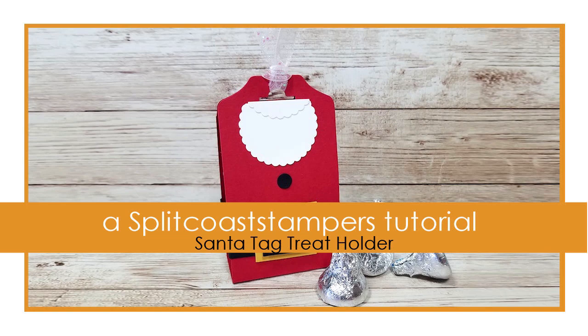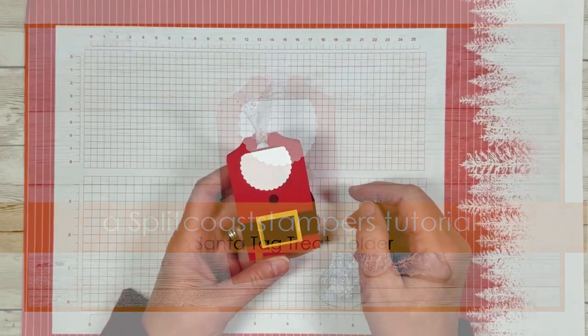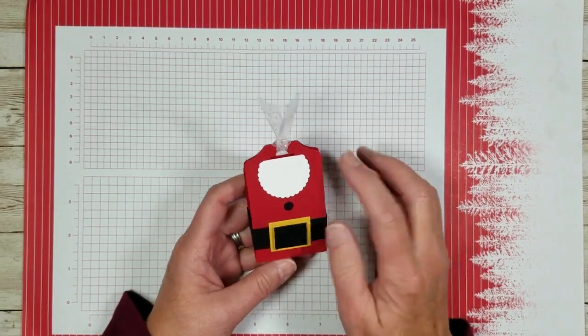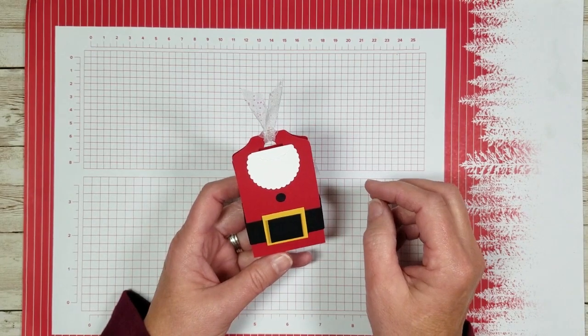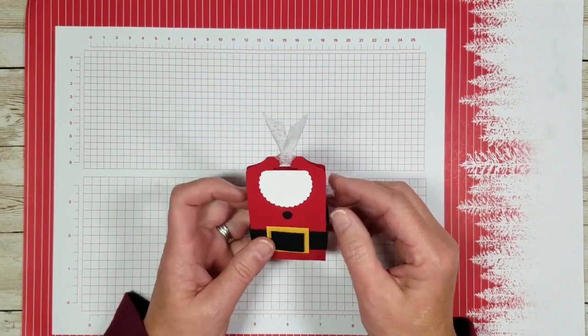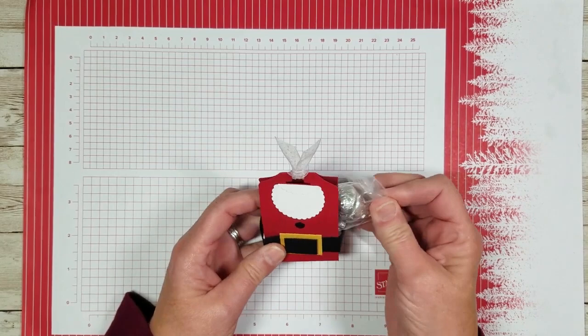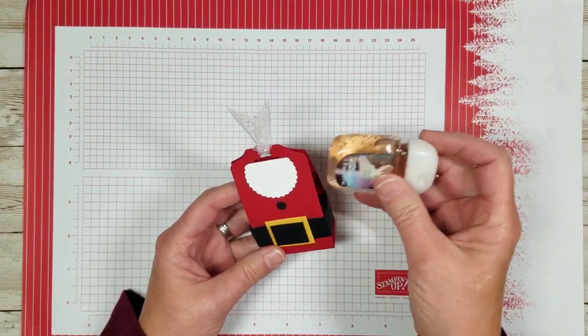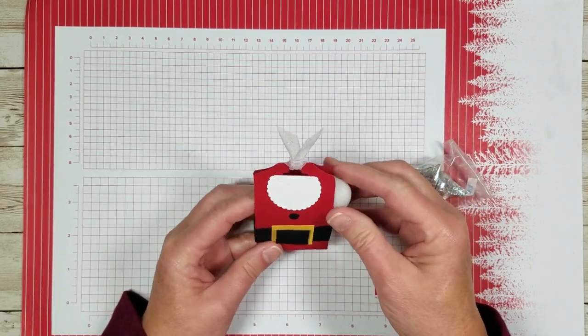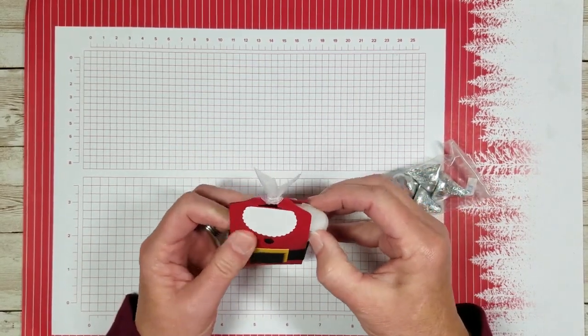Hello crafty friends. My name is Twyla Davis and today I'm going to show you how to make a super quick and fun little Santa treat holder. This one holds four little Hershey kisses. You could also put a hand sanitizer in there as well. Let's get started.